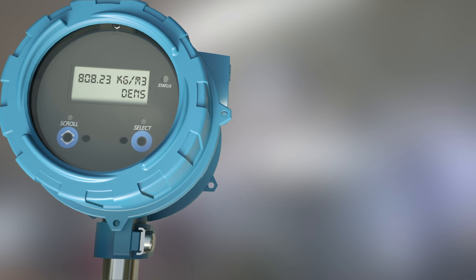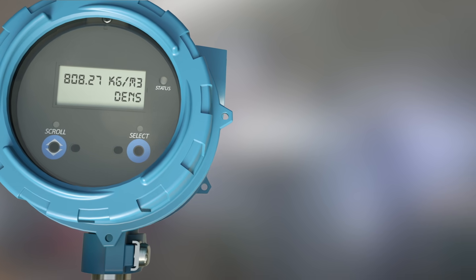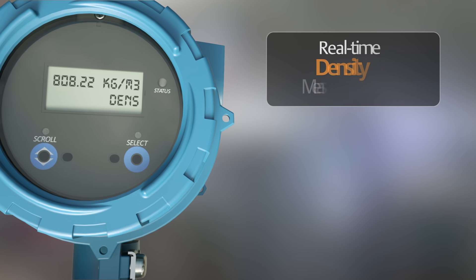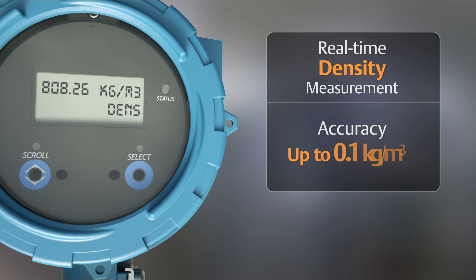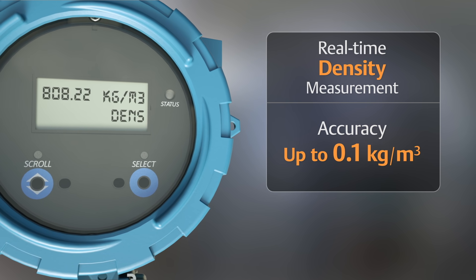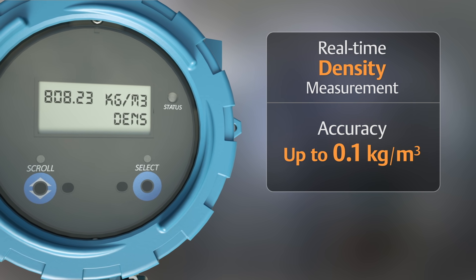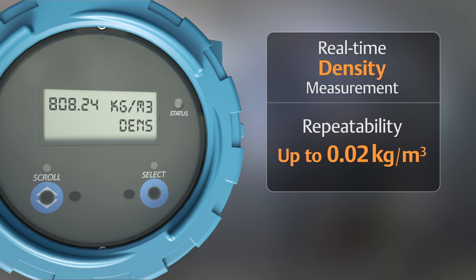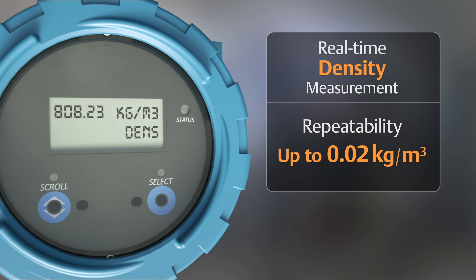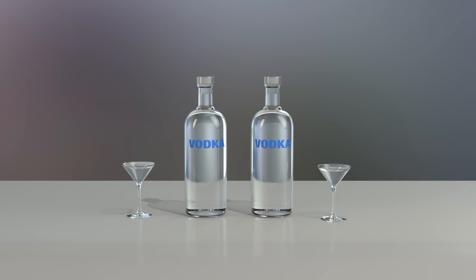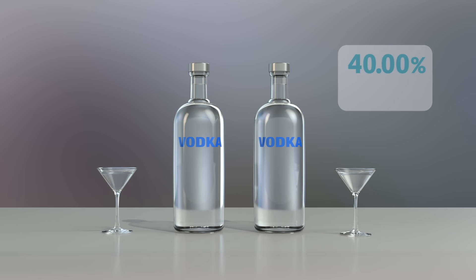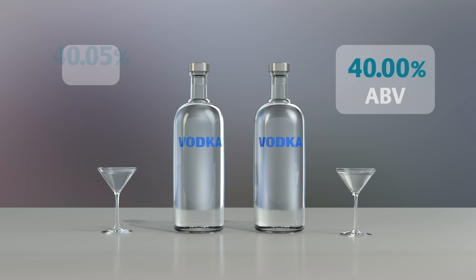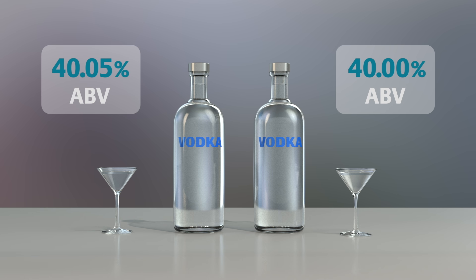Let's look at some of the key features of the Compact Density Meter. The meter provides real-time inline density measurement with up to 0.1 kg per cubic meter density accuracy and up to 0.02 kg per cubic meter density repeatability. For example, this means the meter is sensitive enough to detect the difference between a concentration of 40.00% and 40.05% alcohol by volume.